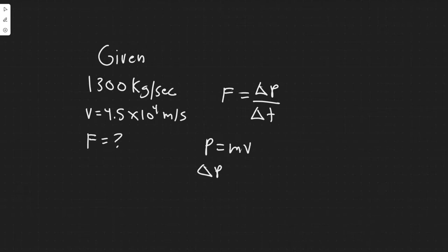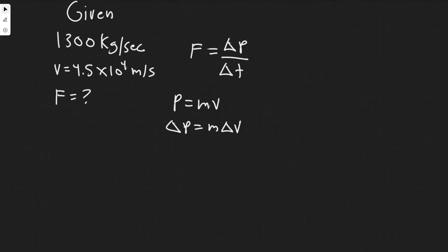So the change in momentum is equal to mass times the change in velocity because the mass is constant. So really this is mv final minus mv initial because that's how you get the change in the velocity, and then that gives us the change in momentum.